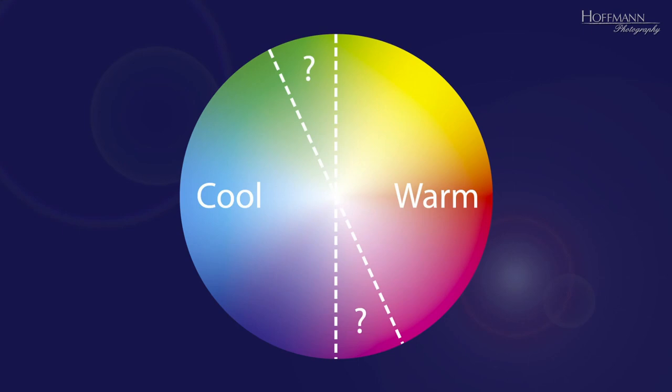However, there are some areas of the color wheel — those in the top left, the green hues, and at the bottom right, those more or less magenta colors — where people disagree whether they are cool or warm.